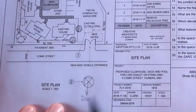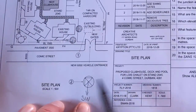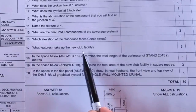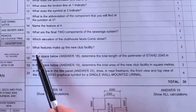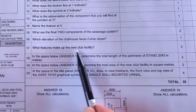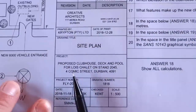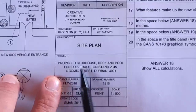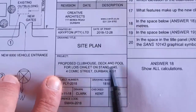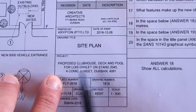Make sure you get this right — it's not just going to be north, south, east, or west. The answer needs to be a compound direction like south-west. What features make up the new club facility? The answer is proposed clubhouse, deck, and pool — all three items make up the new facility.